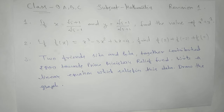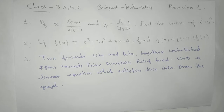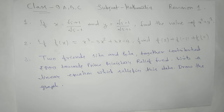Here we have three questions related to Class 9 mathematics. The first one is from real numbers, that is the number system. The second one is from the polynomial chapter, and the third one is from linear equations in two variables. Let's see the first one: if x equals root 5 plus 1 by root 5 minus 1, and y equals root 5 minus 1 by root 5 plus 1, find the value of x squared plus y squared.